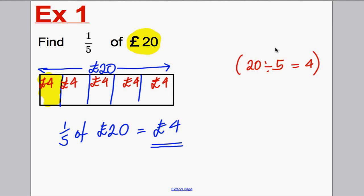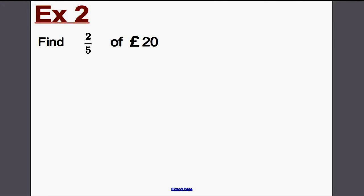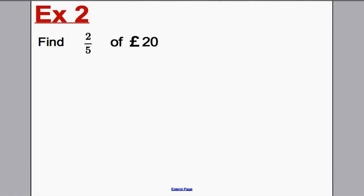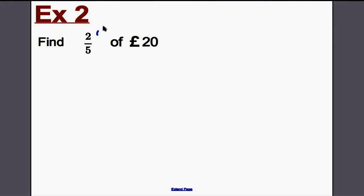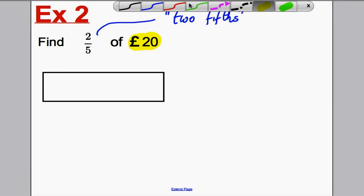Let's do another example, just ever so slightly more complicated. Take a moment to write example two in your books. We are finding two-fifths of 20 pounds. Now, previously we were finding one-fifth of 20 pounds, and now we're finding two-fifths. This word here means two-fifths — that's how you say it, two-fifths. So we'll do as we always do: our total is 20 pounds, so let's draw ourselves a box or rectangle to represent that 20 pounds.